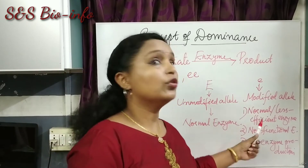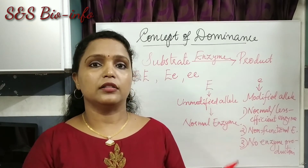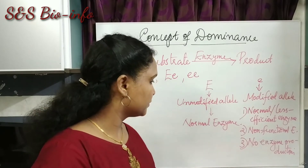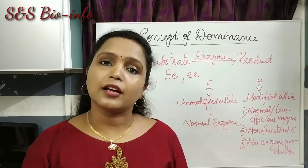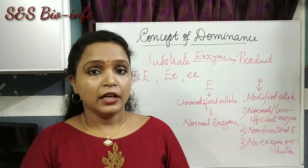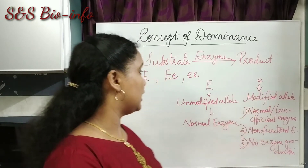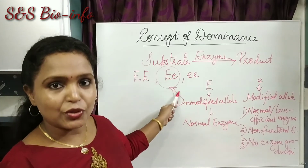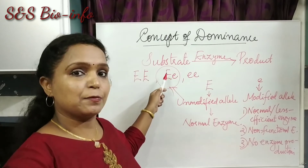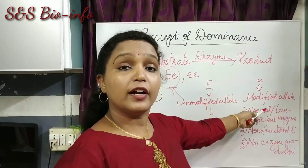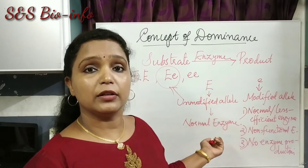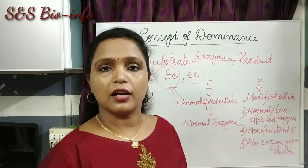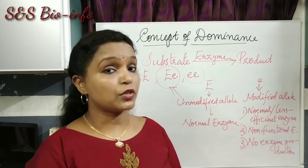The second and third cases are more serious. A non-functional enzyme means the enzyme is produced but it will not work — it cannot help in the conversion of that substrate into product. In the third case, there is no enzyme production at all, so there is no conversion of the substrate into product. In the heterozygous condition, the unmodified allele expresses its effect — that is dominance — and the effect of the modified allele is hidden, so normal enzyme is produced and the phenotype is the same. In homozygous recessive condition, however, there is no functional enzyme or no enzyme, which definitely affects the conversion of substrate into product.